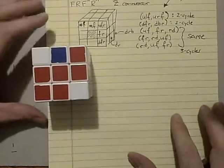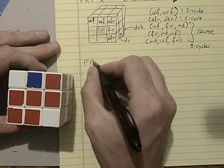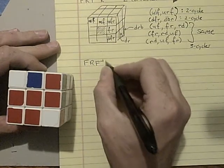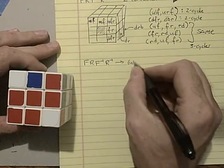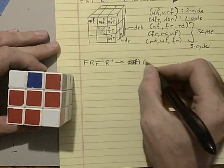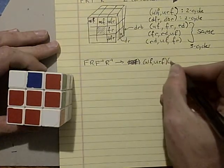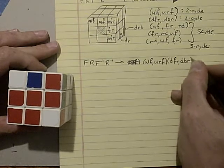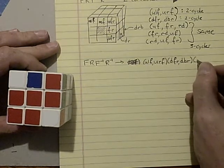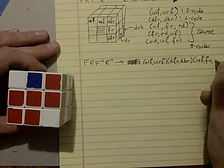So that seems kind of confusing. What's the payoff? Why would we bother with all this extra formalism? So this move right here, what it does is it moves these two corners. It swaps them. It moves these two corners. And then it moves these three edges.